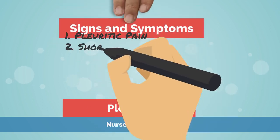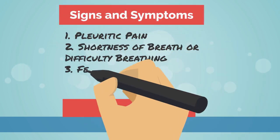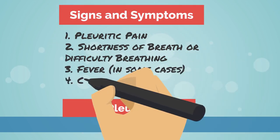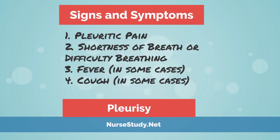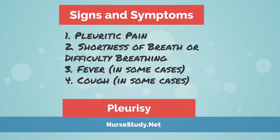Signs and symptoms: Pleuritic pain — a sharp, stabbing chest pain that gets worse with breathing, coughing, or sneezing. This might also be worsened by moving the upper body and may radiate to the shoulders or back. Shortness of breath or difficulty of breathing — the patient tends to have less respirations or perform shallow breathing as a response to the pain.